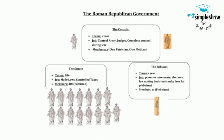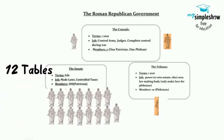Both groups had the vote, technically, but the patricians could serve in government and the plebeians couldn't. The protection of the plebeian class came from the patrician authority and was laid out in the Twelve Tables, a sort of Roman constitution for keeping the social contract.